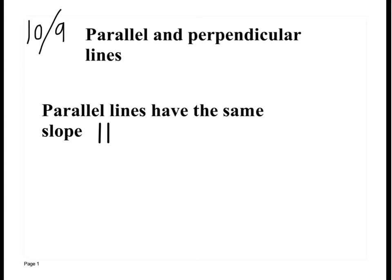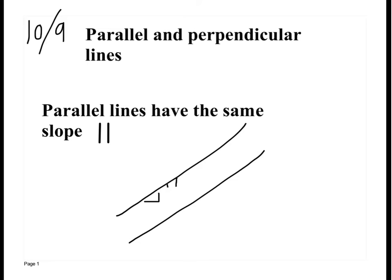Parallel lines have the exact same slope. If they give you the slope of one line and say another line is parallel, then that line is going to have the exact same slope. Because if you had a line doing this and a line parallel to it, they both have the exact same slope. They both change the same.